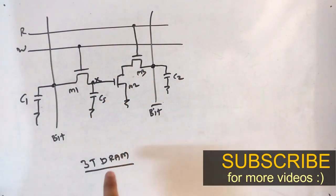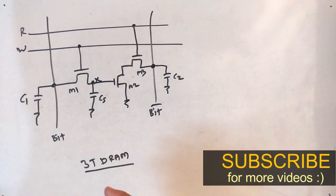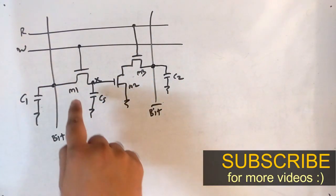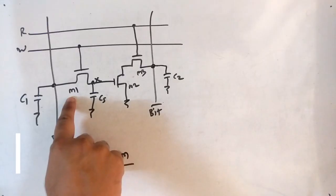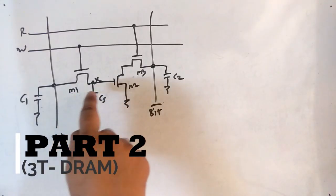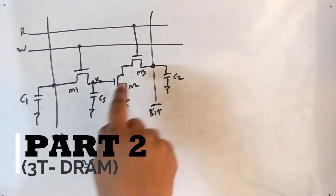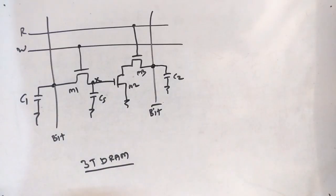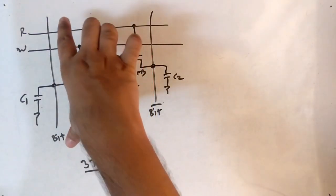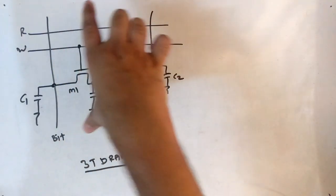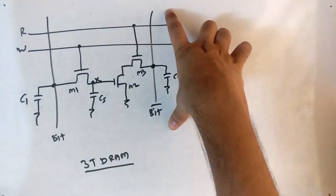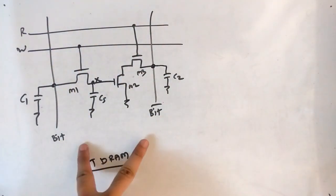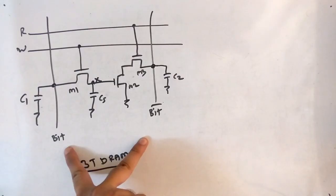This is the circuit of 3-transistor DRAM. Why 3-transistor DRAM? You can see we have 3 transistors: M1, M2, and M3. Now let's see the overall view of the circuit. First, we have the bit and bit-bar lines — these are the 2 lines.